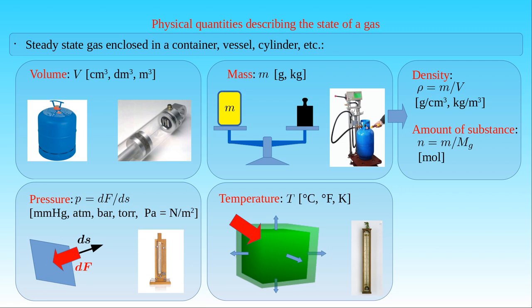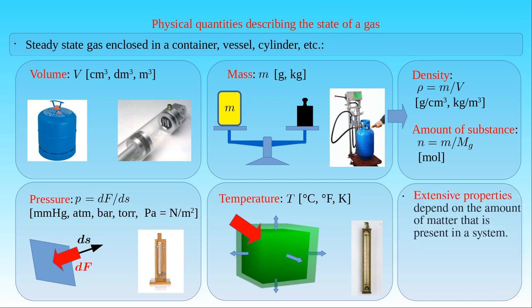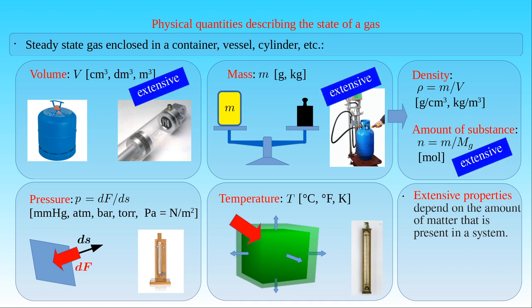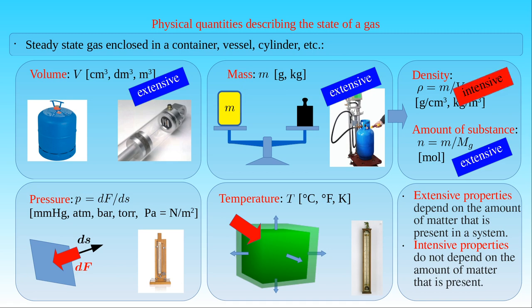These enlisted quantities can be classified into two categories: extensive and intensive properties. Extensive properties depend on the amount of matter that is present in a system, and an extensive property is considered additive for subsystems. The examples for such a property among the quantities introduced here are volume, mass and the amount of substance. Intensive properties are bulk properties, which means they do not depend on the amount of matter that is present. Examples of intensive properties include density, pressure and temperature.